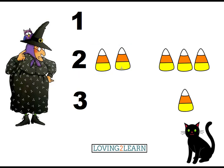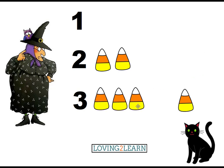...two candy corns. Let's count the next row: one, two, three. Where is the number three? Here's the number three, so let's bring those candy corns down. Now we have the number three and three candy...